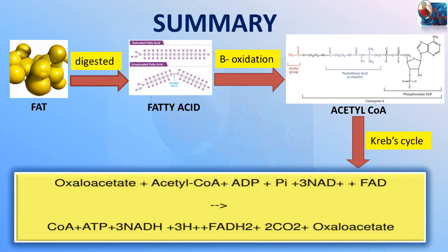To summarize, we have seen fats getting digested into fatty acids, which then undergo beta oxidation to produce acetyl coenzyme A. In the presence of oxaloacetate, this acetyl coenzyme A is completely oxidized to two molecules of carbon dioxide. Therefore we say that fat burns, or gets oxidized, in the flame of carbohydrate — and here that carbohydrate is oxaloacetate. So this was all about this video. See you in the next video. Thank you.